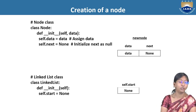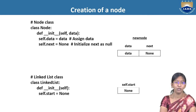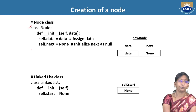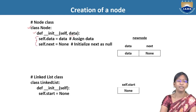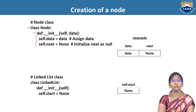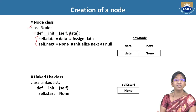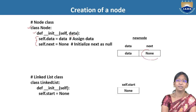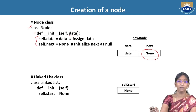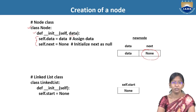Coming to the creation of a node, I am going to leverage object-oriented concepts of Python using classes. In class Node, the constructor takes data as a parameter. Its member variables are: self.data, which takes the value of data, and self.next, which is initialized with None. When you create a node it is not linked to any other node, so we mark its next part with None, saying there is no next element yet.